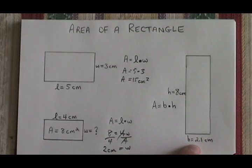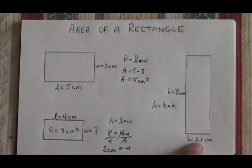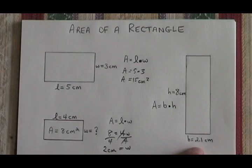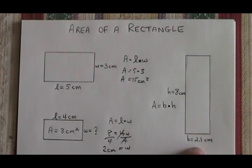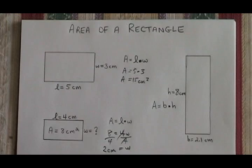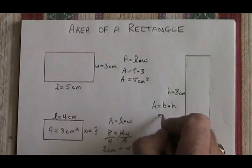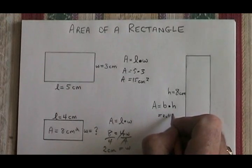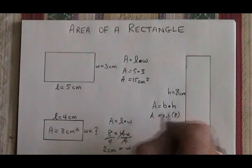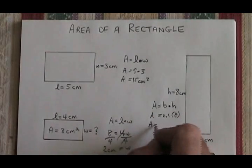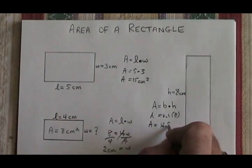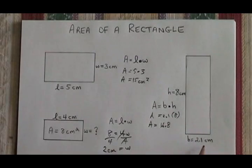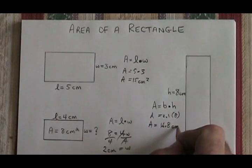In this rectangle, we are given an H and a B, so it's the height and the base. We work with the formula the same way. Area is equal to base times height. So we take our base, which is 2.1, and we multiply it by our height, which is 8. Our area is equal to 16.8. The units were centimeters, so the unit of area is centimeters squared.